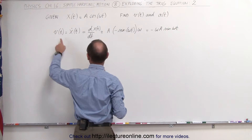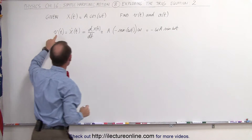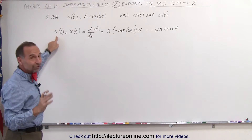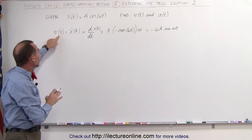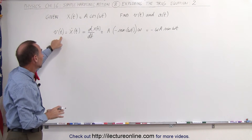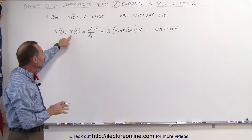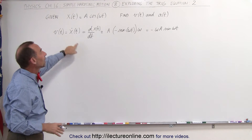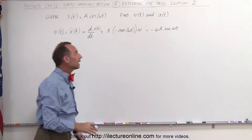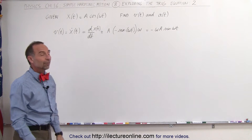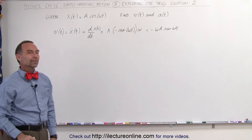So the equation defining velocity as a function of time, which is the derivative of the position as a function of time, is equal to minus omega a times the sine of omega t.